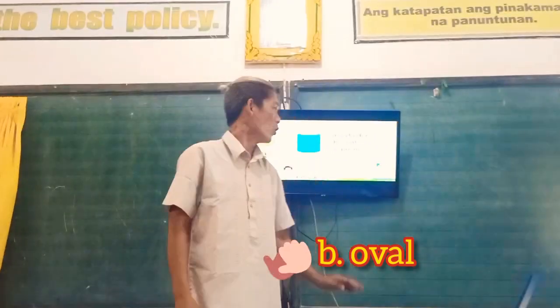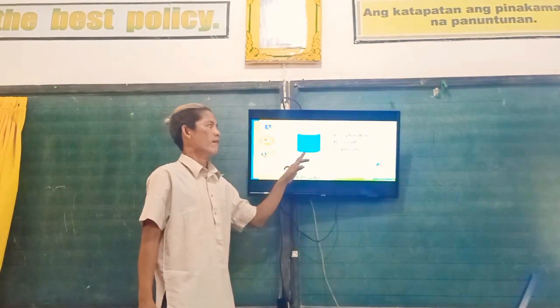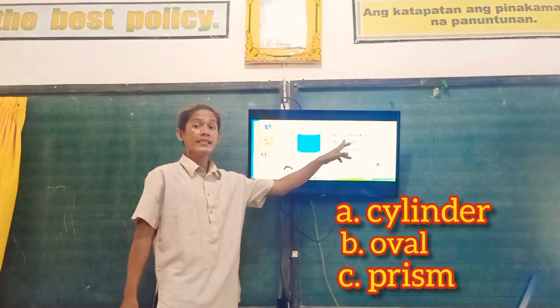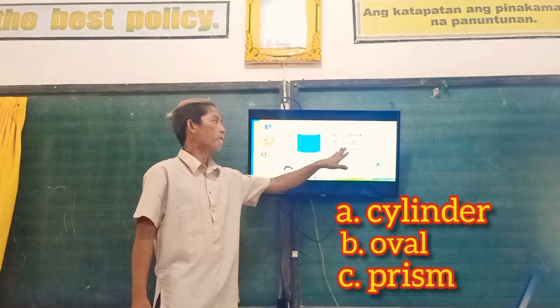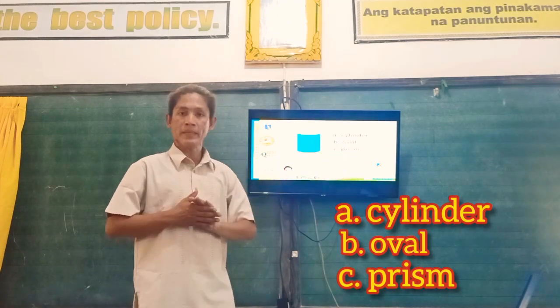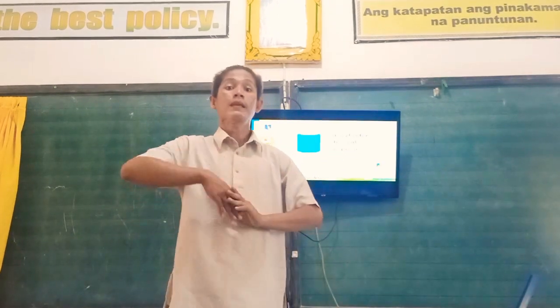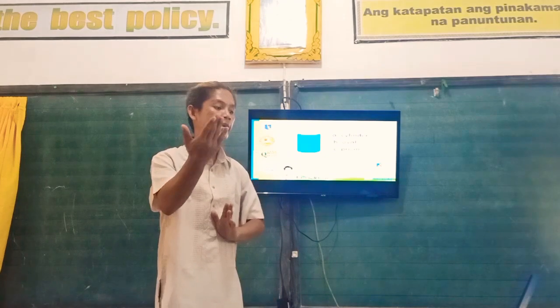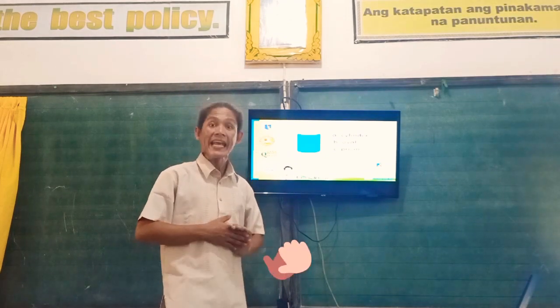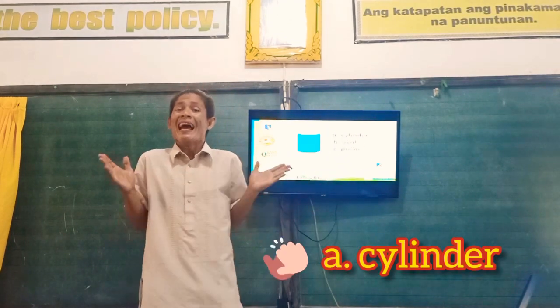And how about this one? Is it A. Cylinder, B. Oval, or C. Prism? This is Letter A — Cylinder. Very good.